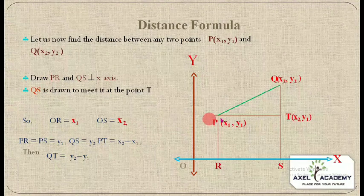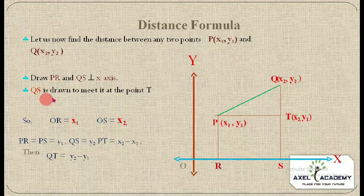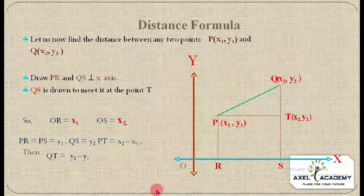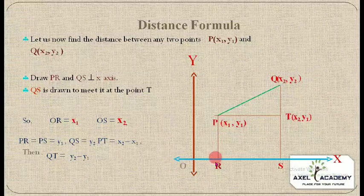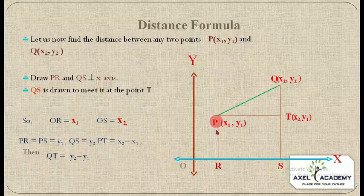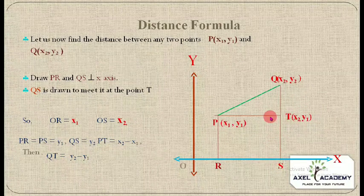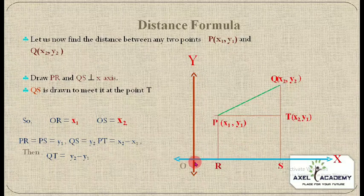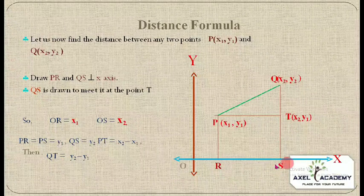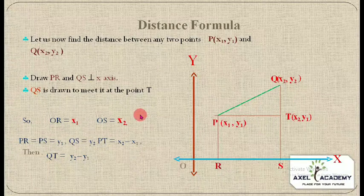We draw PR and QS perpendicular to the x-axis, and QS meets PR extended at point T. Here OR = x₁, OS = x₂, PR = y₁, and QS = y₂. Therefore, PT = x₂ − x₁ and QT = y₂ − y₁.